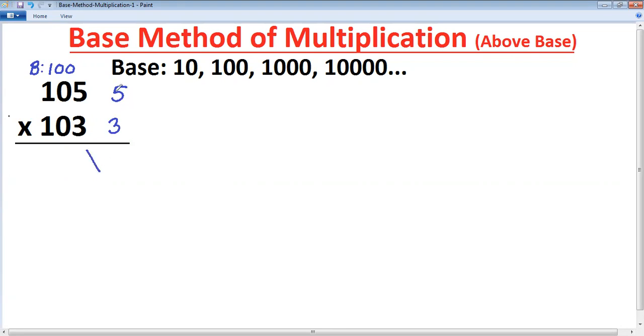Next step, multiply these differences. That is right hand side answer. 5 into 3 is 15. Cross addition, that is left hand side answer. 105 plus 3 is 108. If you add this way also answer will be same, always same. So final answer just join together. 10815 is the answer of this multiplication.